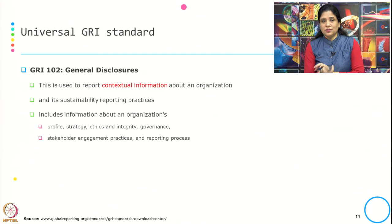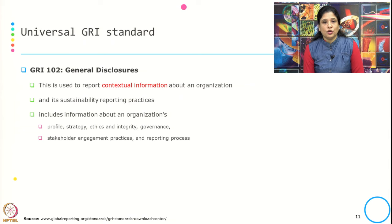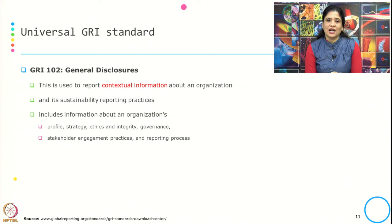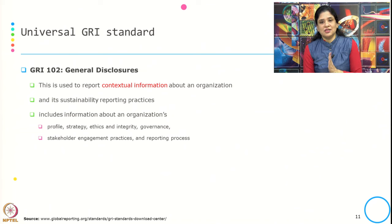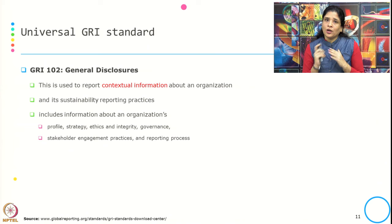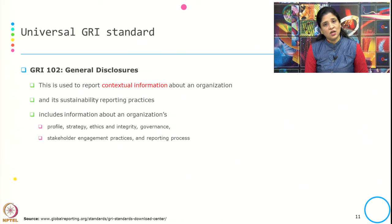GRI 102 General Disclosures is used to report contextual information about an organization and its sustainability practices. It includes information about the organization's profile, strategy, ethics, integrity and governance, as well as stakeholder engagement practices and the reporting process.